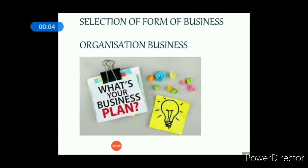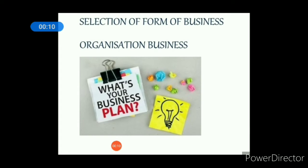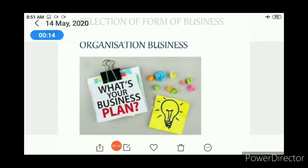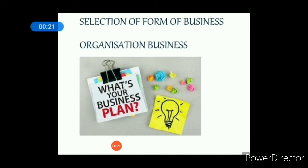Today we are going to start a new chapter — selection of form of business organization. After studying various forms of business organization, each form has certain advantages as well as disadvantages. A particular form is successful in a special situation, while in another situation, some other form may be successful. Hence, while selecting the form of business organization, some factors must be kept in mind. यह बहुत जरूरी है कि जब भी आप एक business organization का selection करने जा रहे हो, तो आपके mind में कुछ factors होने चाहिए, जिनके behalf पर आपने उस form of business का selection करना है।